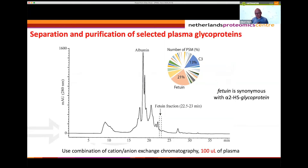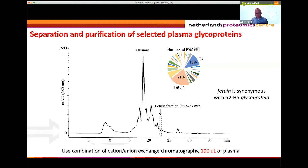We do this in a very simple way: we use plasma, deplete albumin, and then fractionate by a combination of cation exchange and anion exchange. Our fractionation is not as good as what you get with peptide separation, but we can collect different fractions. For instance, in the fraction at 22 to 23 minutes, we isolate quite neatly the plasma protein fetuin. So we said, let's first look at this fetuin isolated from human plasma.